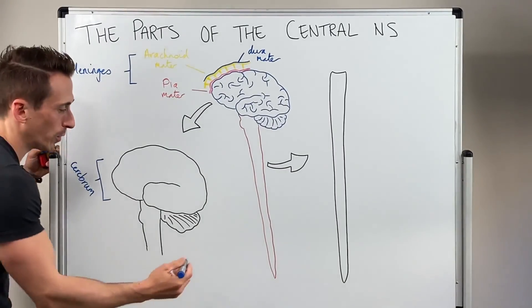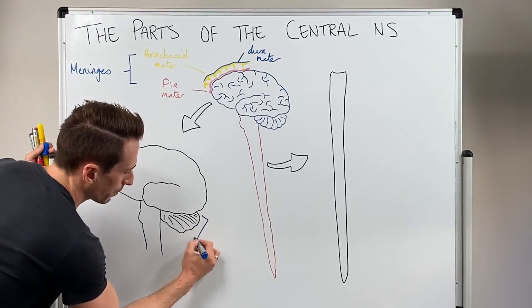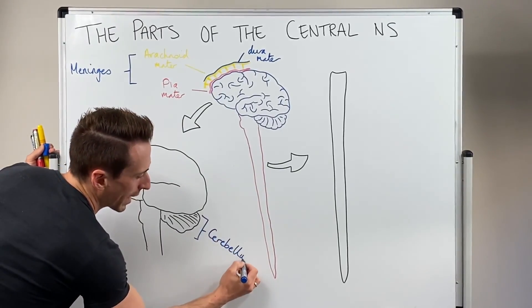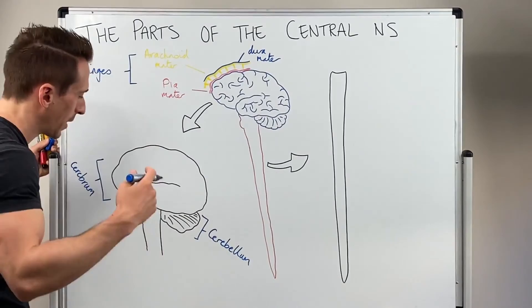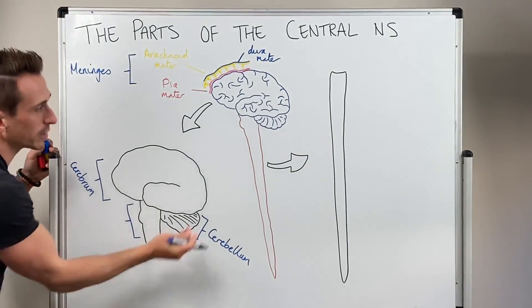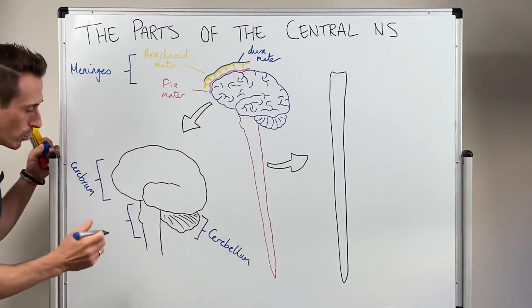Then we've got the little cerebrum, which we term the cerebellum. And cerebellum actually does mean little cerebrum. And then we've got the brain stem. And obviously below the brain stem, that's where we've got the spinal cord.